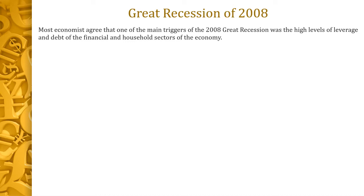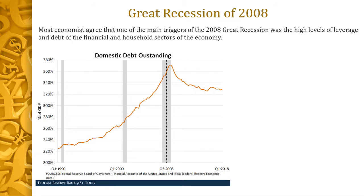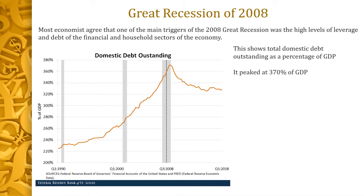Pretty much all economists at this point agree that the Great Recession of 2008 was really triggered by high levels of leverage and debt. Looking at domestic outstanding debt versus GDP for that time period, we see a really high rate of debt beginning just before 2008. This is the percentage of debt versus GDP, and it peaks around 370 percent of GDP. Even in 2018 when this chart ends, the debt level is still pretty high.